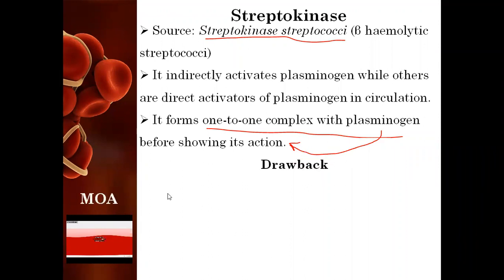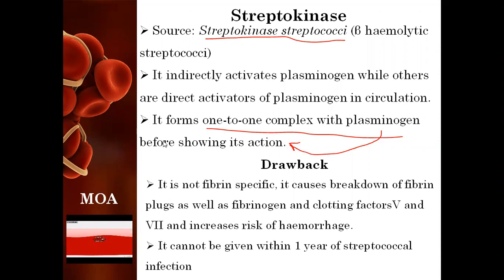Drawbacks of streptokinase: first, it is not fibrin-specific — it causes breakdown of fibrin plugs as well as fibrinogen and clotting factors 5 and 7, thus increasing the risk of hemorrhage. Second, it cannot be given to patients who have suffered a streptococcal infection within the past one year. These are the two major drawbacks of streptokinase.